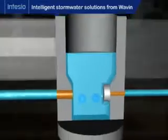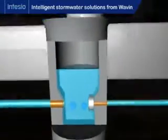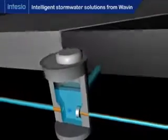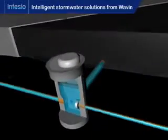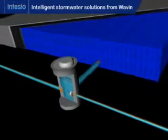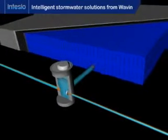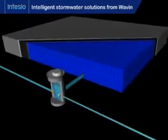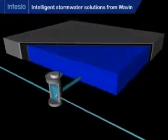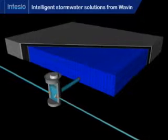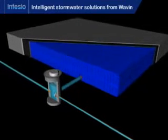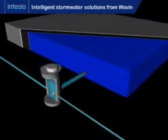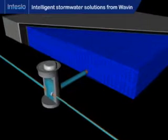When the volume of stormwater becomes very high, the water flows over the weir wall within the flow control manhole and then on into the underground aquacel tank. The aquacel tank is a large water storage unit that houses stormwater temporarily.